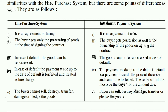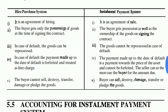Whereas in the Installment Payment System, the payment made up to the date of default is treated as payment towards the price of the asset and cannot be forfeited. The amounts you have paid are considered as part of the purchase price.